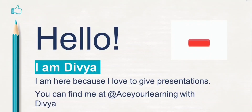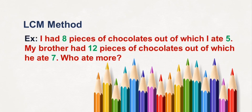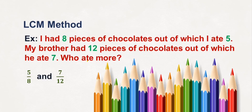Let's understand how to compare through the LCM method. For example: I had 8 pieces of chocolates, out of which I ate 5. My brother had 12 pieces of chocolates, out of which he ate 7. Who ate more? To find out who ate more, we'll have to compare the given fractions: I ate 5 out of 8 pieces, and my brother ate 7 out of 12 pieces. So we need to compare 5/8 and 7/12.